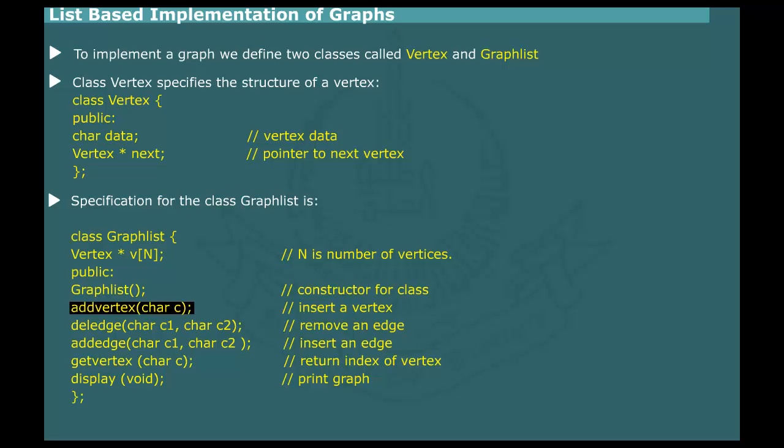Add Vertex to insert a new vertex to the graph. Del Edge to remove an edge from the graph. Add Edge to insert a new edge between a pair of given vertices. Get Vertex to return the index number of vertex. Display to print the graph. Click here to run interactive demonstration for list-based implementation of a graph.